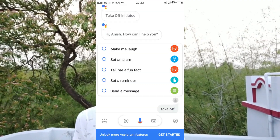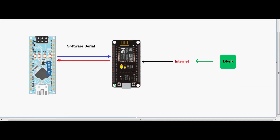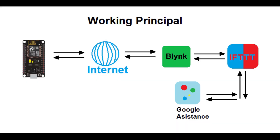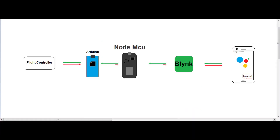For voice recognition I need a voice recognizer, but that's too costly, so I'll use Google Assistant on my mobile, which offers a lot of benefits. Since my system transfers data over the internet, I can control my drone from anywhere in the world. The procedure is simple — I'm going to use IFTTT.